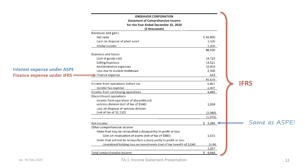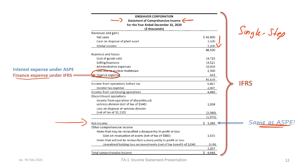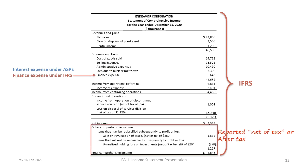Now that we have our title, our Endeavour Corporation statement of comprehensive income shows that everything up until net income is essentially the same as under ASPE, with one notable exception: what ASPE called interest expense is now called finance expense or finance costs under IFRS. Otherwise, this single-step statement has the same presentation of revenues and gains, the same presentation of expenses and losses in descending order of dollar value, giving us income from operations before tax, income tax expense, income from continuing operations, and discontinued operations — giving us net income of $3,389,000.